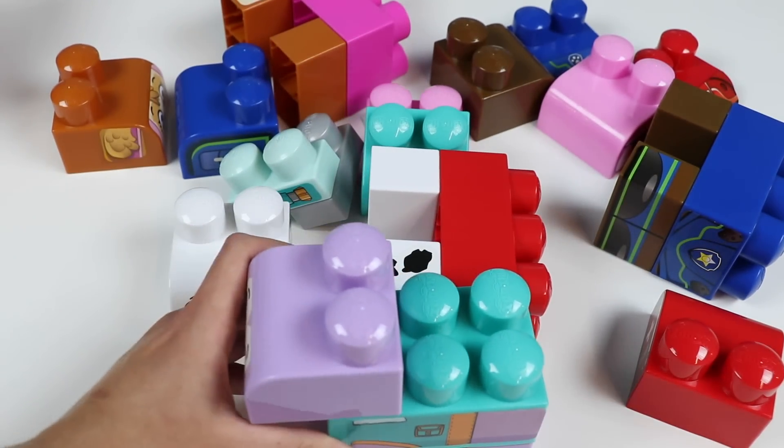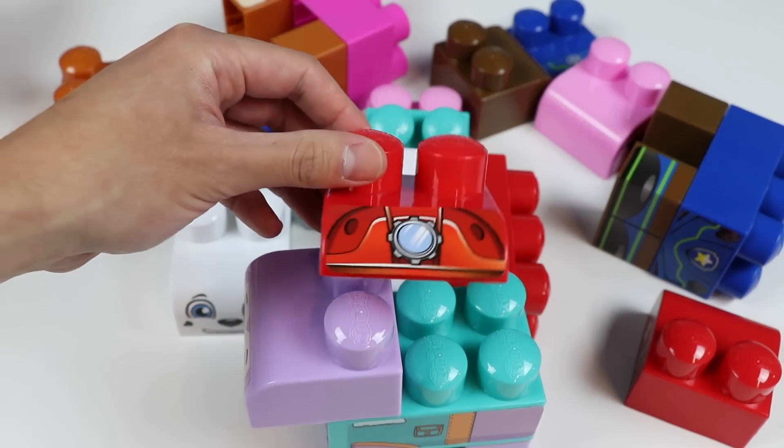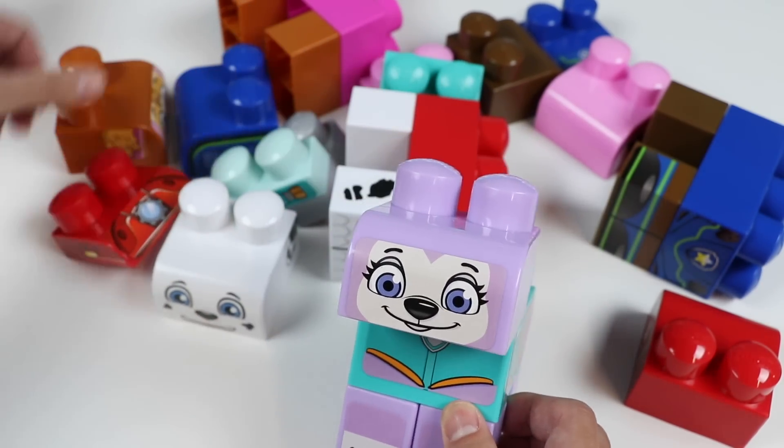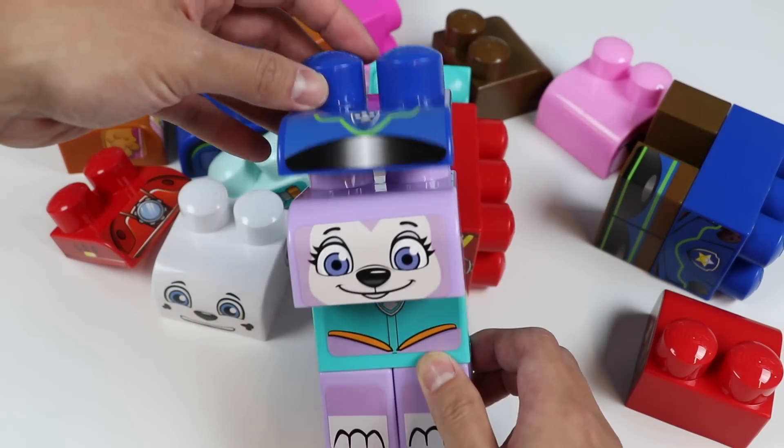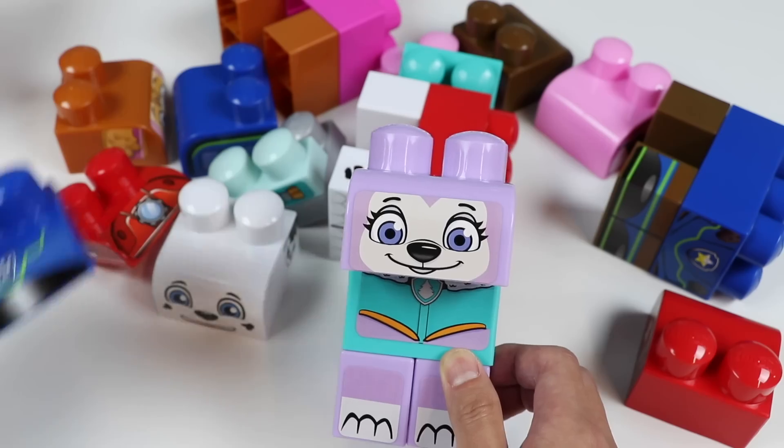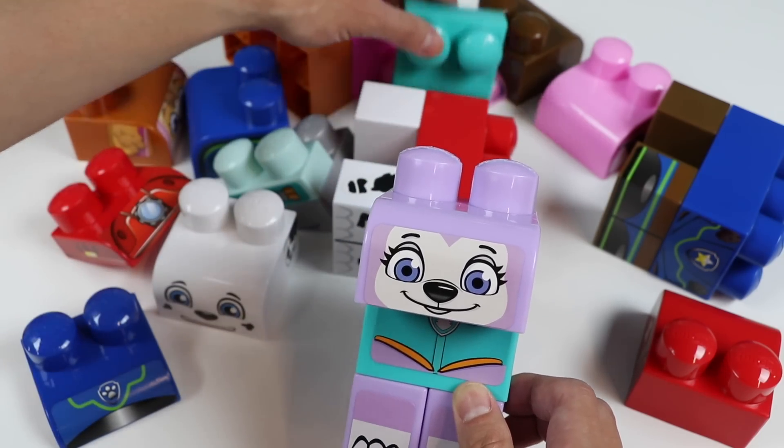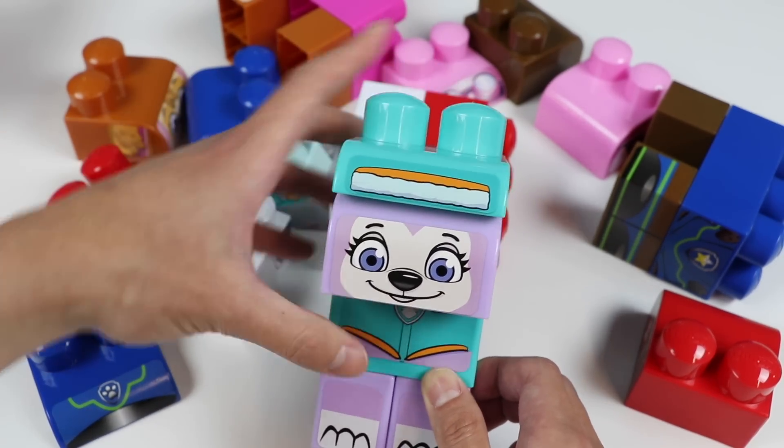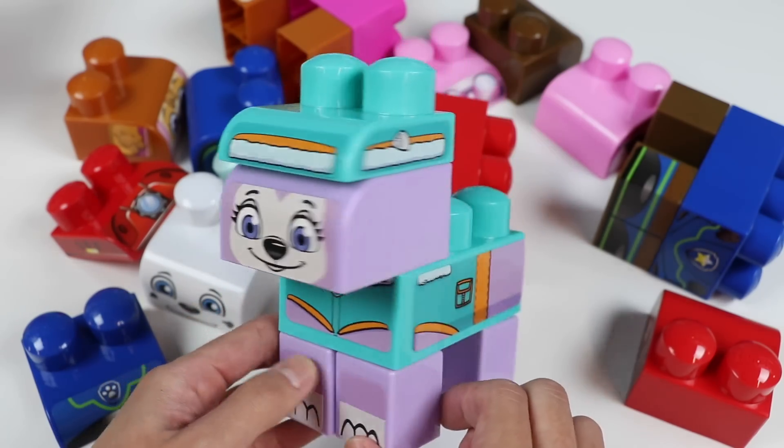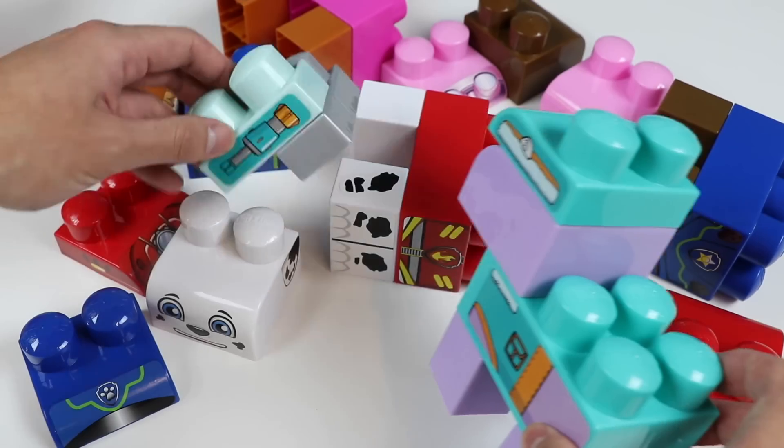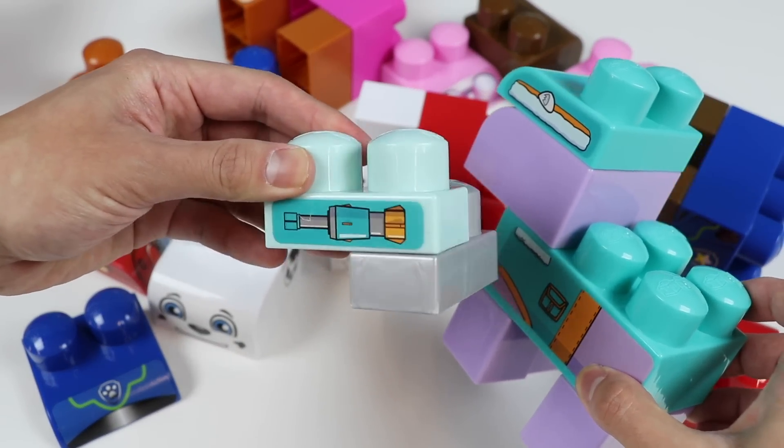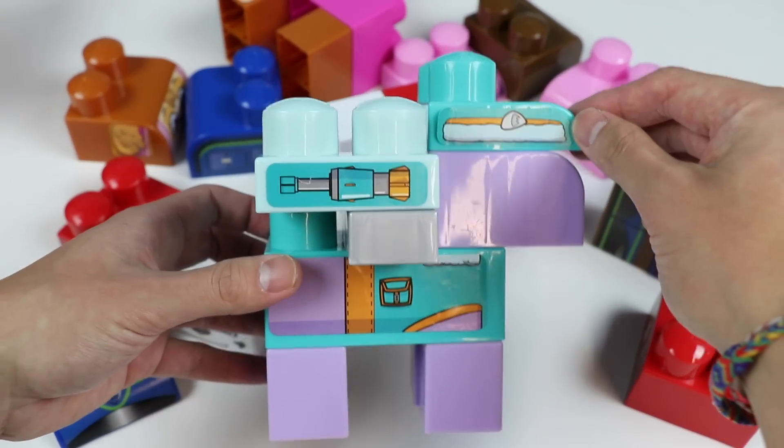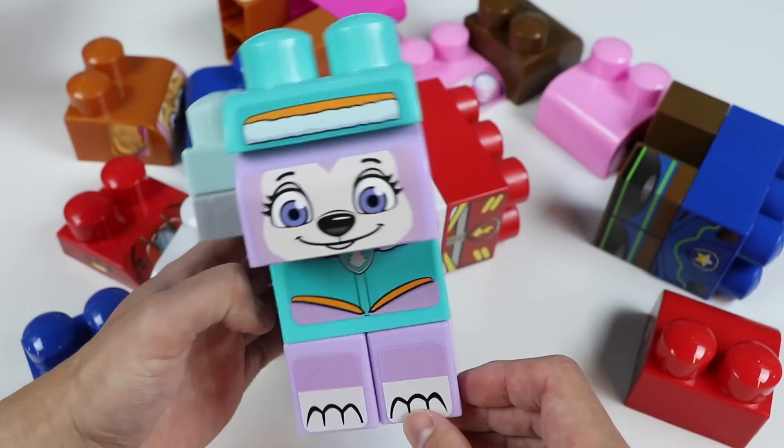Alright Everest, let's find the rest of your pieces. Is this firefighter hat yours? This doesn't look right. What about this police hat? Oh, it fits you! But this isn't yours either. What about this teal wool cap? Now that's the perfect match. It goes along with your wool coat. And let's attach your pup pack, which is this teal piece. And you're good as new Everest! Rubble's really sorry, so don't give him a hard time.